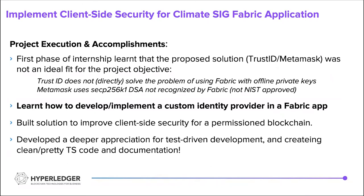Getting back to abandoning the first deliverable of using TrustID: in the first phase of the internship, we quickly realized this solution was not an ideal fit for our actual objectives. TrustID did not directly solve the problem of using Fabric with offline private keys — it was a workaround, because the TrustID chaincode still required on-peer keys; it just added an additional key layer. Also, MetaMask uses a digital signature algorithm — secp256k1 — that is not recognized by Fabric because it is not NIST-approved.